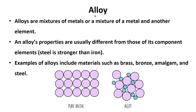Alloys are mixtures of metals, or a mixture of a metal and another element. For a pure metal, the representation shows all atoms of the same kind. For alloys, the representation shows another atom present along with the main metal — shown here in blue color.